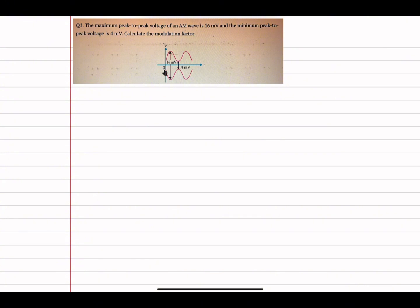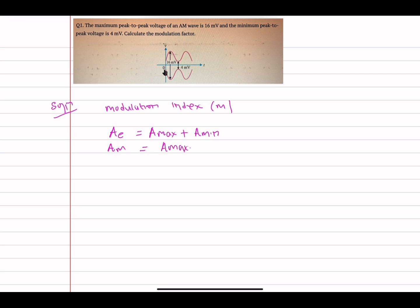The modulation factor is the same as the modulation index, also represented by m. The carrier amplitude Ac is equal to (Amax + Amin) / 2, and the amplitude of the message signal Am is equal to (Amax - Amin) / 2. We want to find the modulation index m, which is equal to Am over Ac.